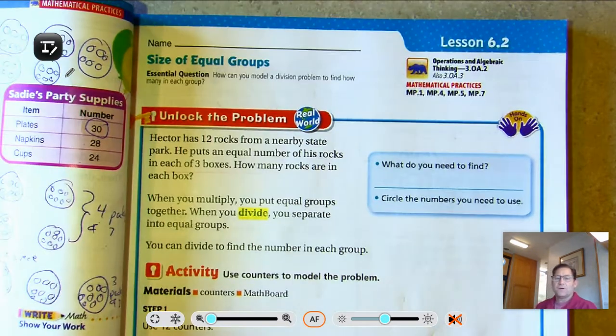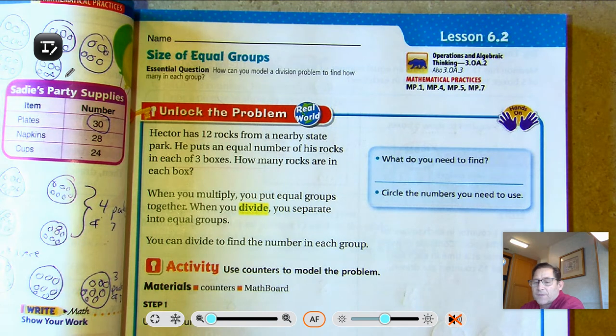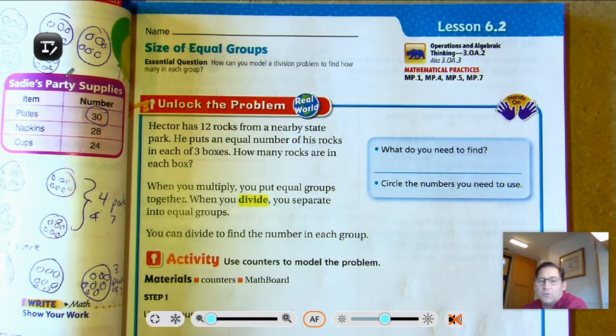Hello. Today we're talking about Lesson 6.2, Size of Equal Groups. We're on page 223 of the Third Grade Textbook. Our essential question for this lesson is: how can you model a division problem to find how many in each group? So you should be able to explain that at the end of the lesson.